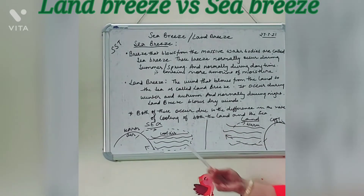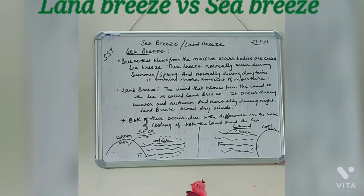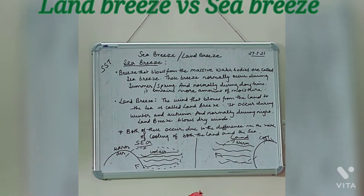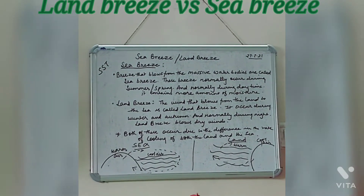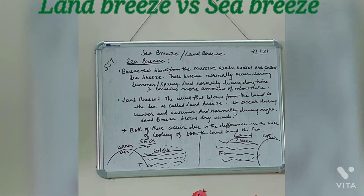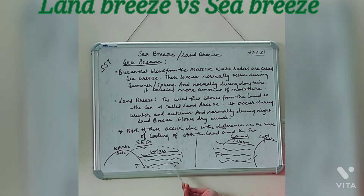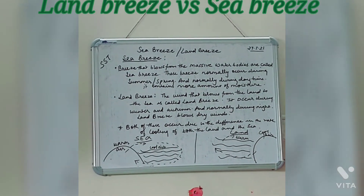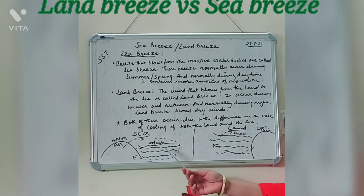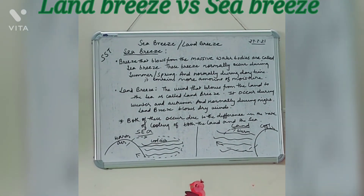As warm land air rises, it creates a low pressure area over the land. Meanwhile, the air above the sea is cool because water takes time to get heated up. So the cool air of the sea starts filling that space — it moves towards the land. This is called sea breeze. This is the high pressure area over the sea, and low pressure area over the land. The wind carries a huge amount of moisture and this happens during daytime because land heats up very fast then.